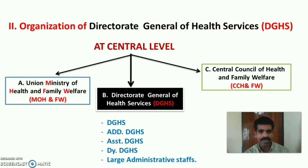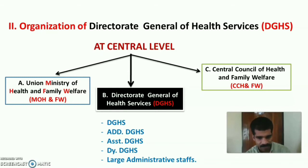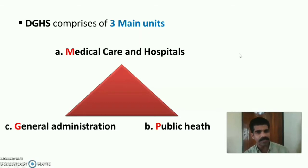The organization of DGHS: headed by Director General of Health Services, followed by Additional Directorate General of Health Services, then Assistant Directorate General, then mainly three Deputy Directorate Generals of Health Services, and large administrative staffs. DGHS mainly comprises three main units — Medical Care and Hospitals, Public Health, and General Administration.